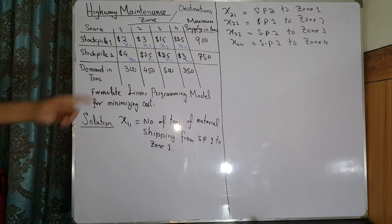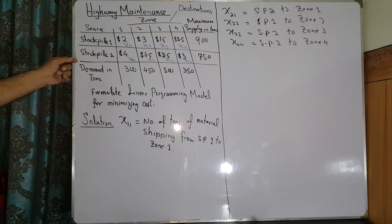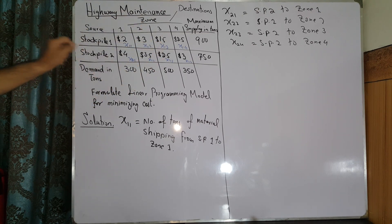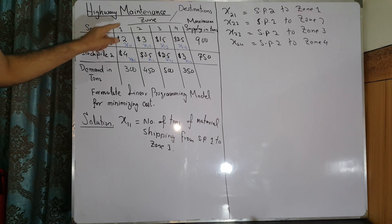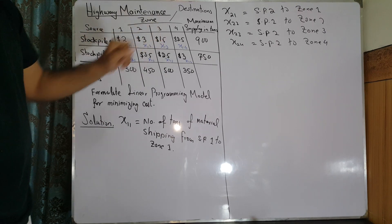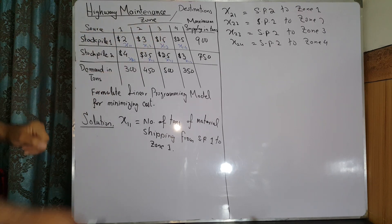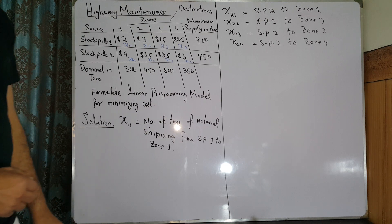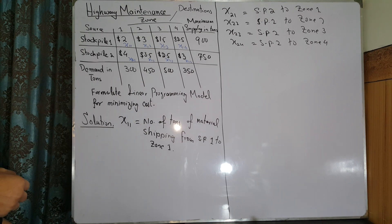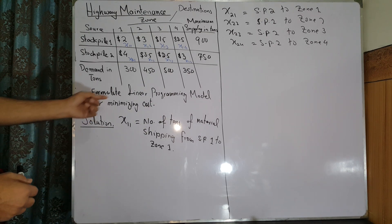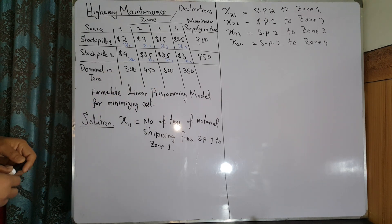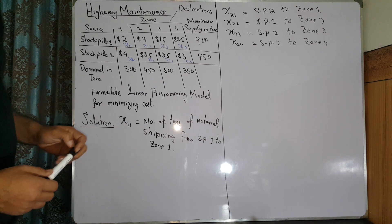In this question, how many tons of salt or sand should be shipped from stockpile 2 to zone 1, 2, 3, and 4? We have to formulate this as a supply and demand problem and minimize the total cost.